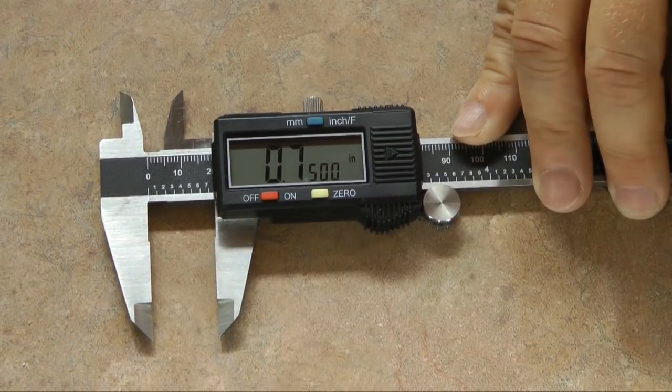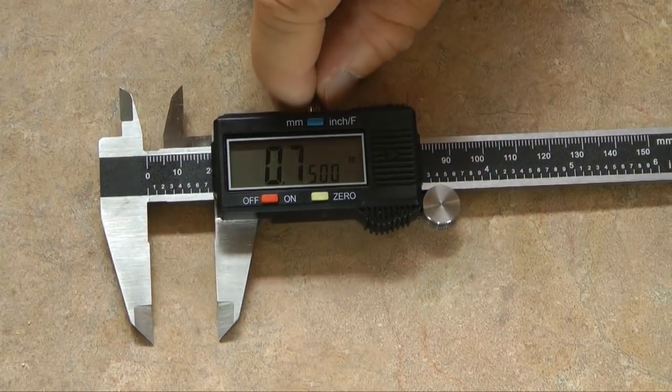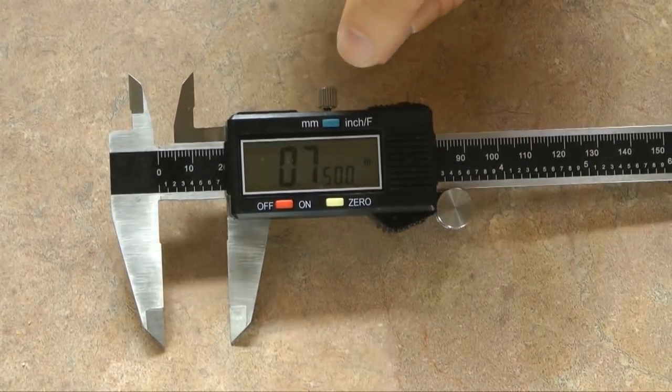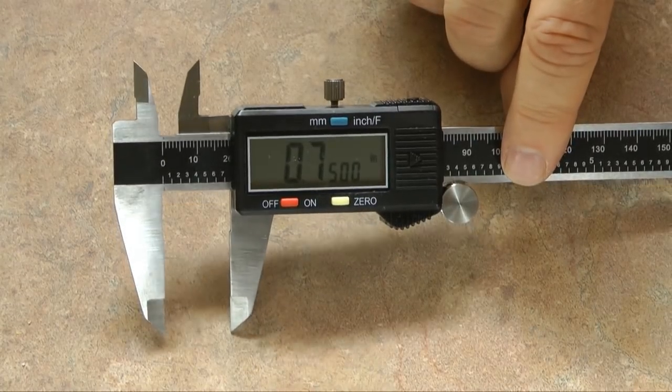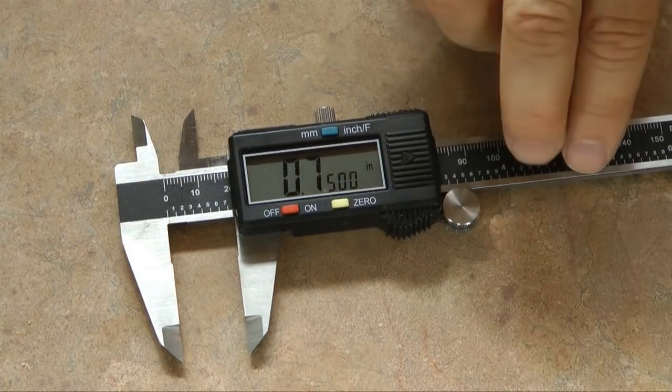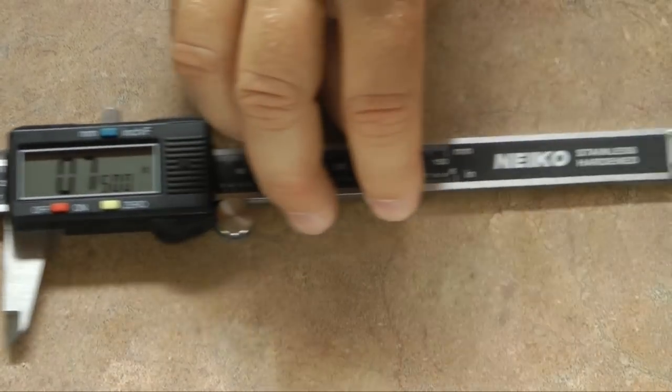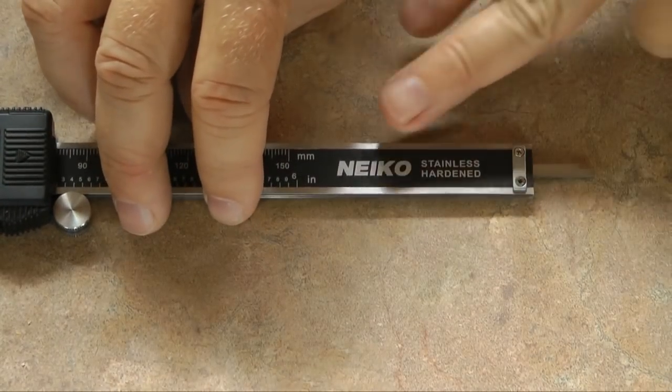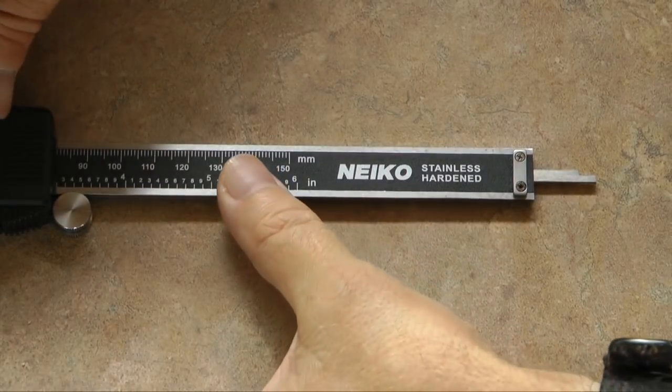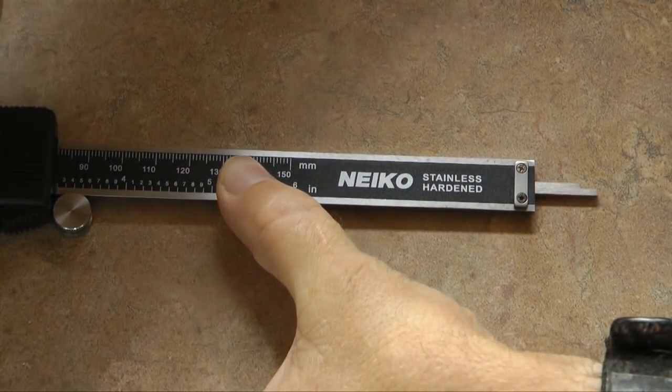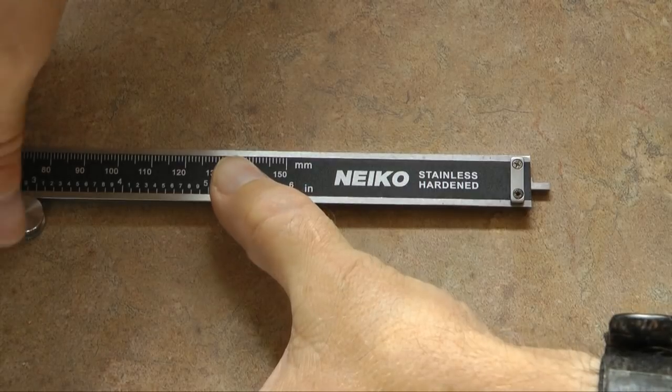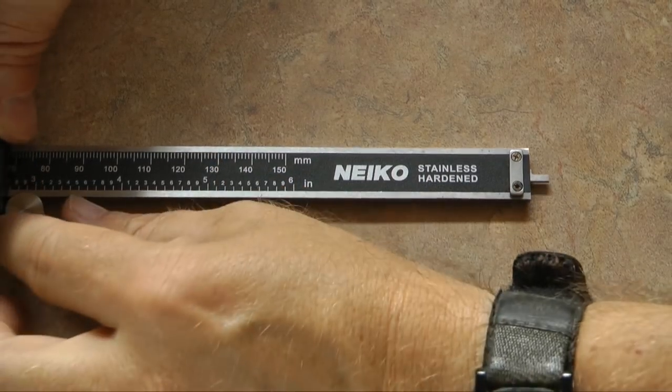And then we also have a locking thumb screw up at the top if we want to take a measurement and lock it in place so that it doesn't move. At the far end, we have the tool that allows us to measure depth, and that moves in and out as we open the jaws.